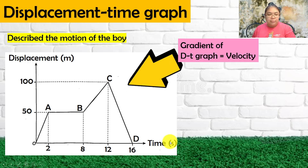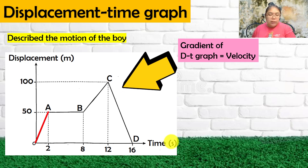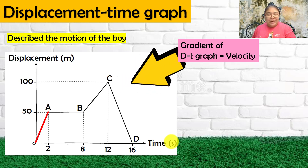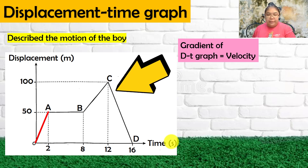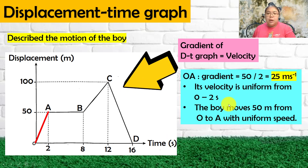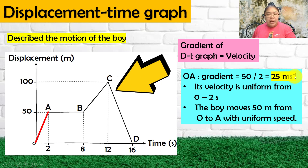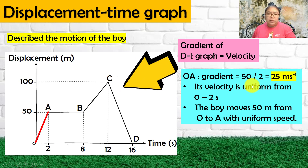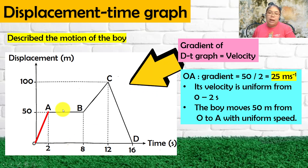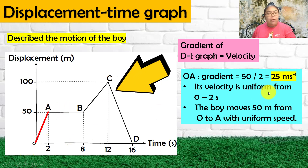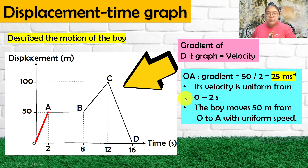Looking at the first part, OA: the line is inclined, so there is a gradient. We calculate the gradient of OA as 50 over 2, giving us 25 m/s. In other words, the velocity on this graph is 25 m/s from O to A, so we can say there is uniform velocity from 0 to 2 seconds.